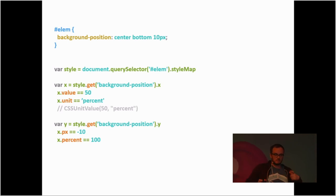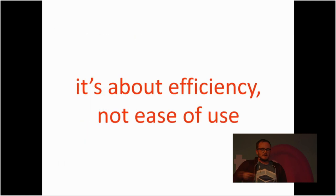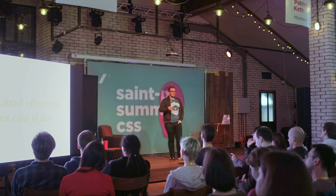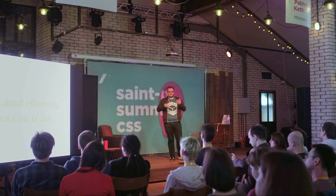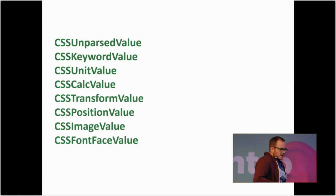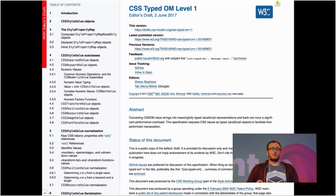For something like a background position with a calc value — bottom plus 10 pixels — you can see the pixel value is 10 and the percent is 100. This might be a little overwhelming, but the thing to keep in mind with Houdini is none of this is about ease of use — it's all about efficiency. You're trying to get closer to the metal of the browser to make things run as fast as possible. JavaScript and CSS are forgiving, but that makes them slow because the browser has to figure out what you're talking about all the time. It's a pretty active spec, and if you get in there today you might be able to start using much more performant APIs in the near future.